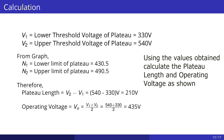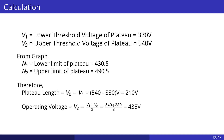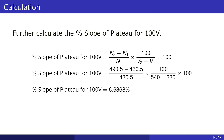That is, if V1 and V2 are the lower and upper threshold voltages of the plateau respectively, then the plateau length is the difference V2 − V1, and the operating voltage is the average of V1 and V2. Further, calculate the percentage slope of the plateau for 100 volts using the formula: ((N2 − N1) / N1) × (100 / (V2 − V1)) × 100, where V1 and V2 are the lower and upper threshold voltages of the plateau and N1 and N2 are the corresponding lower and upper limits of the plateau.